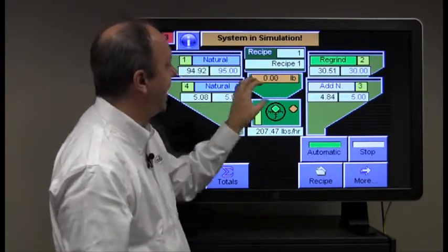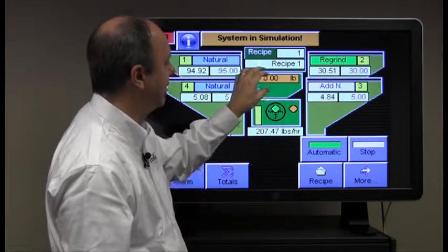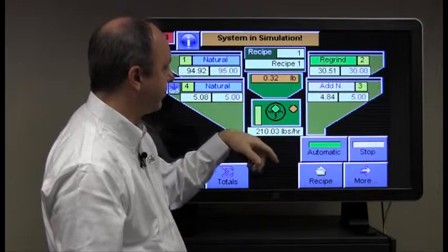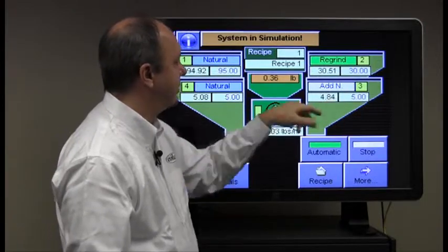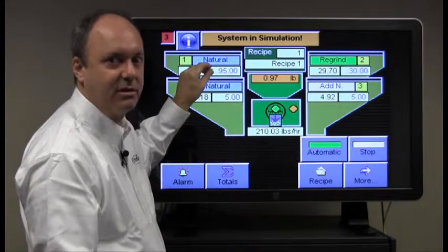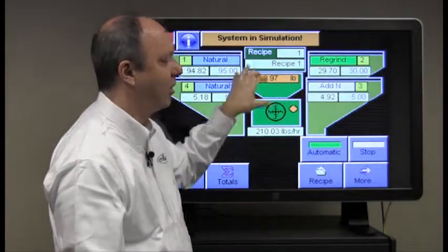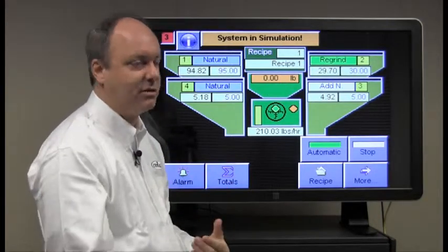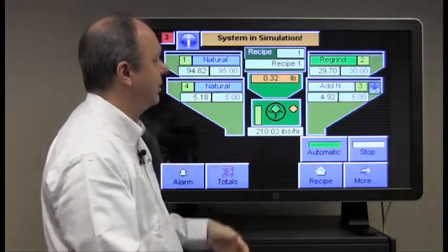What this is doing is when the batch size in this particular case is one pound, the regrind goes in at one third of the pound, the natural is dosed in as a percentage of the rest of these as opposed to a percentage of the total. This is a common recipe entry method for injection processors and this is how it's executed.